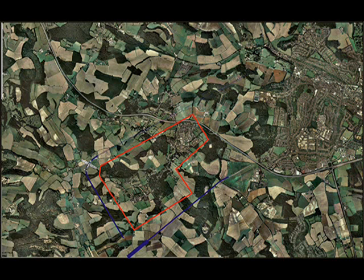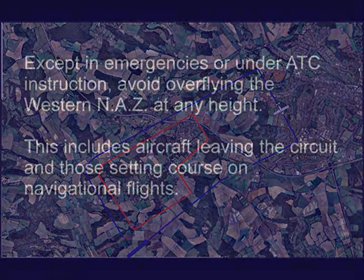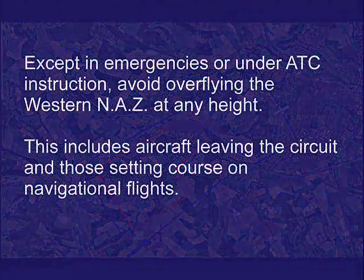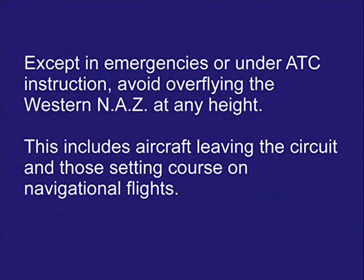The downwind leg is flown parallel to the runway, remaining north of Lane End. Base leg and final approach are standard. Except in emergencies or under air traffic control instruction, avoid overflying the western noise abatement zone at any height. This includes aircraft leaving the circuit and those setting course on navigational flights.